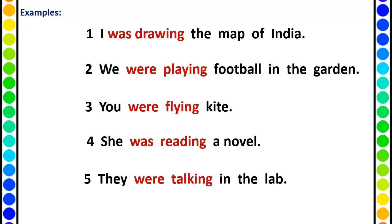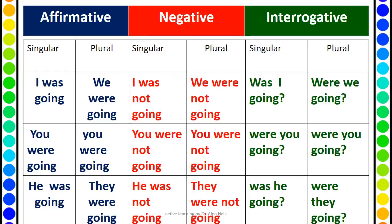Remember, past continuous tense is always used along with the simple past tense. For example: I was drawing the map of India when he came. We were playing football when my mother called me. She was reading a novel when father came. They were talking in the lab when the teacher entered. So generally past continuous tense is always used along with the past tense.